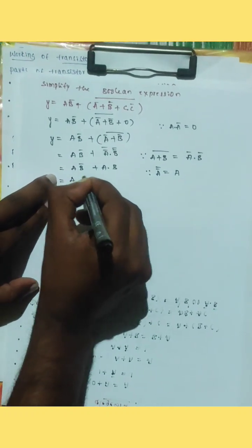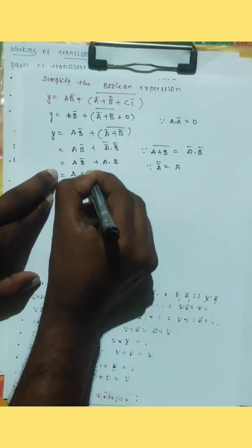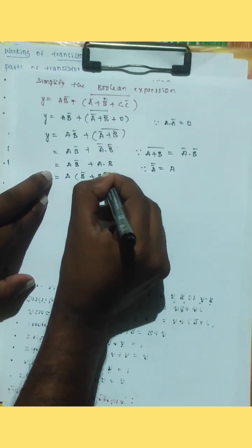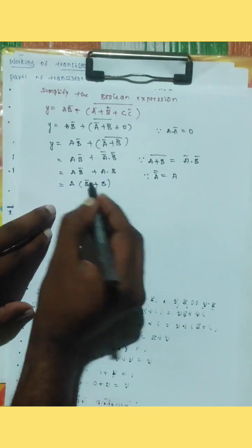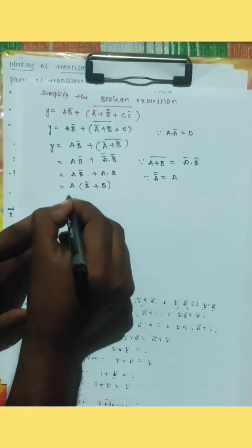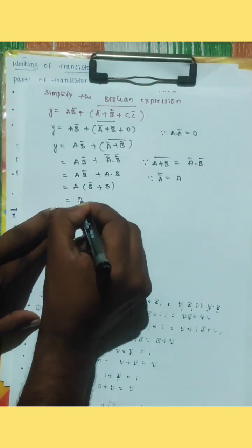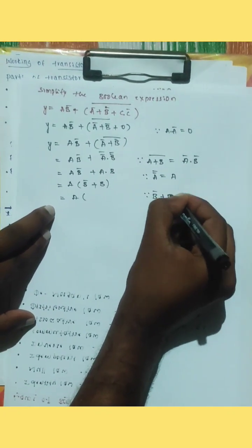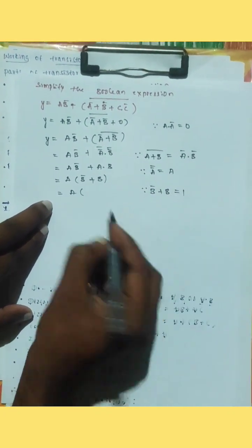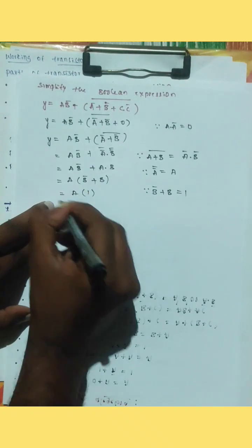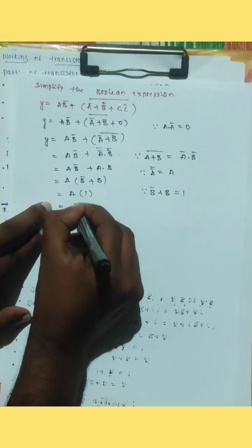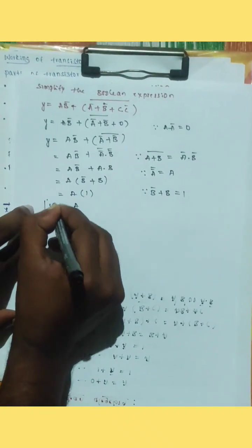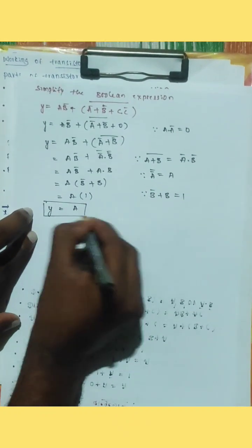Take a common: a into b bar plus b. Because b bar plus b equals 1, that is 1. So y equal to a. Thank you.